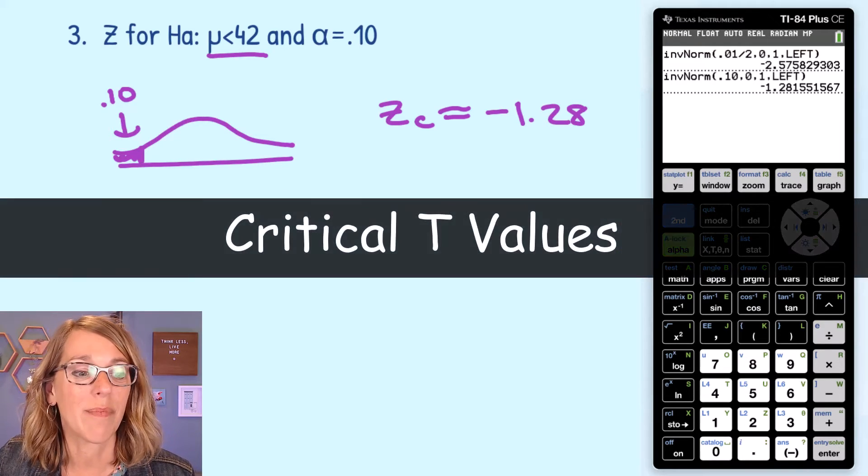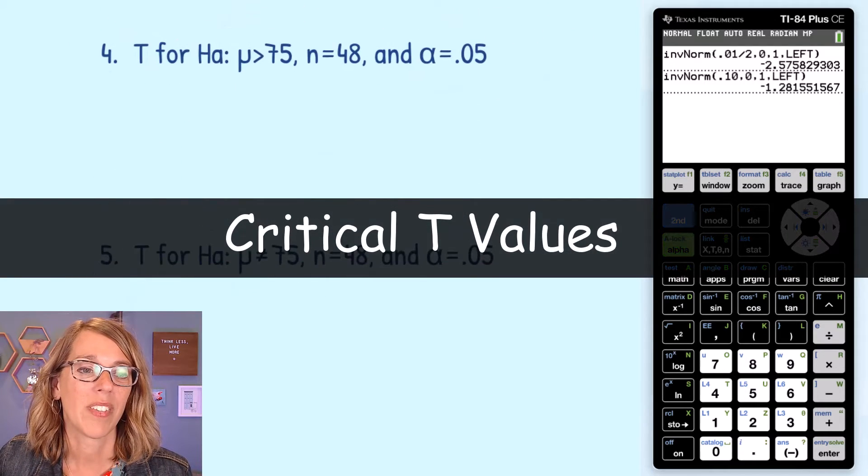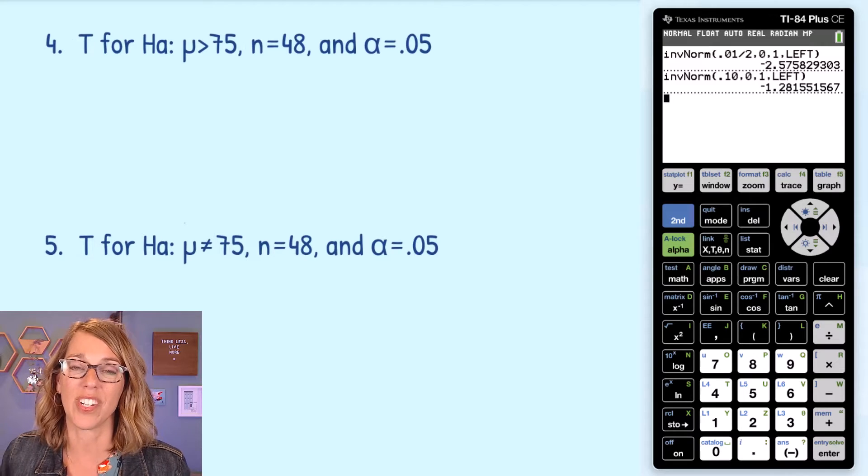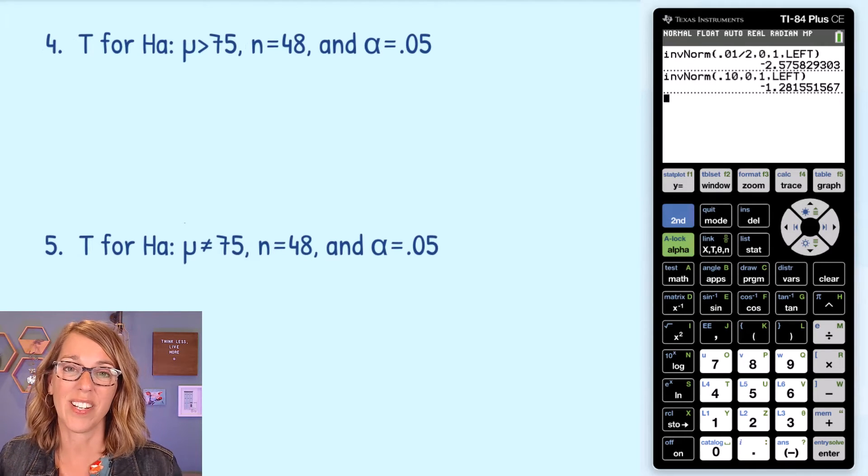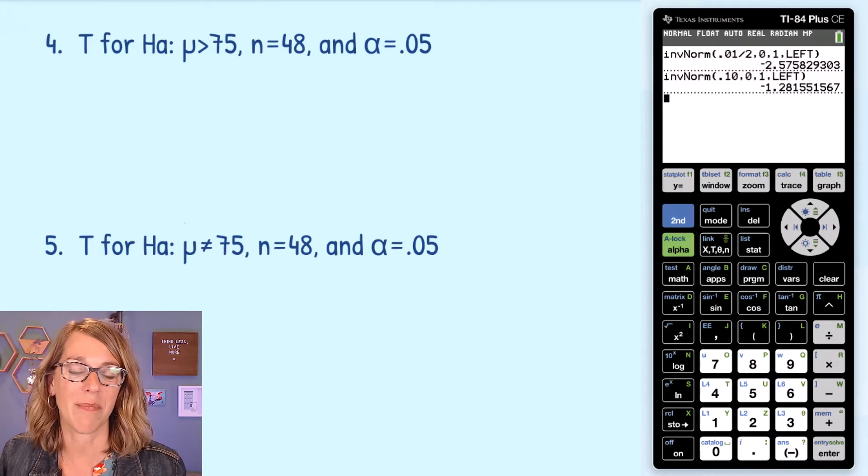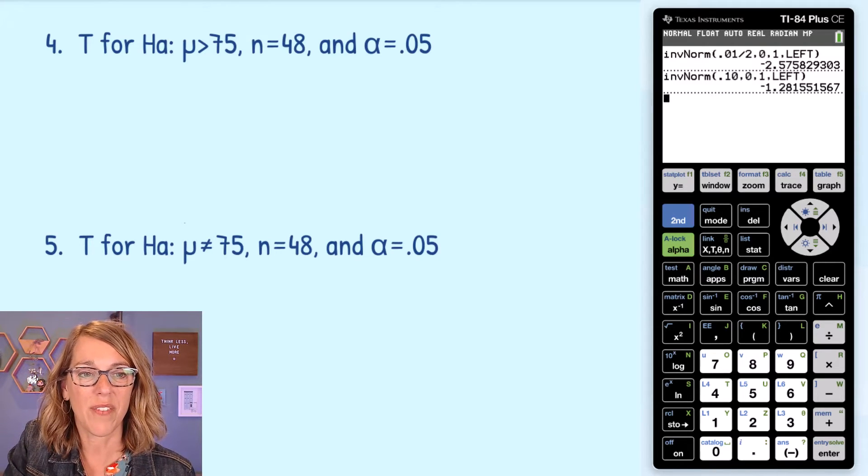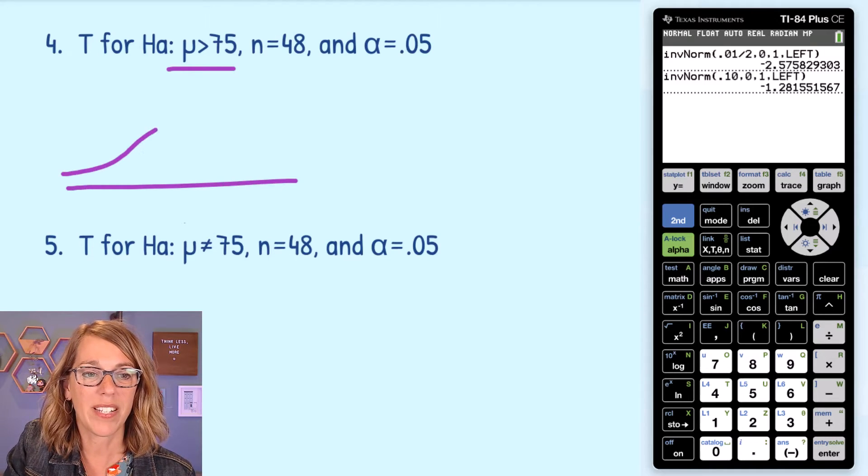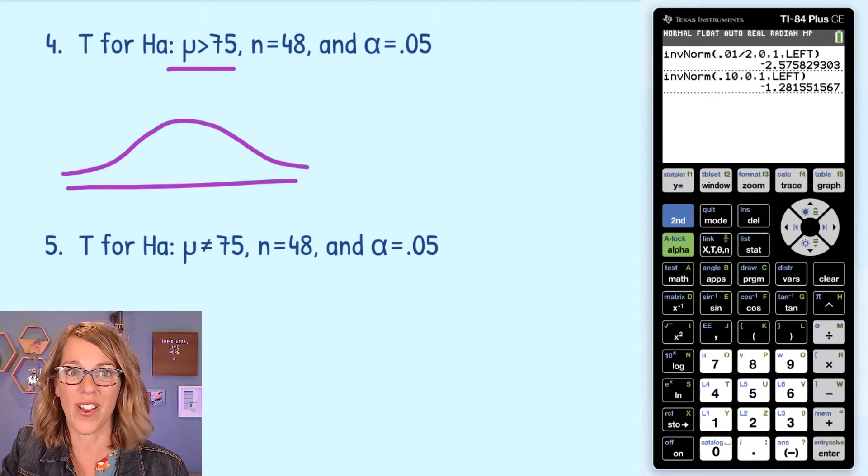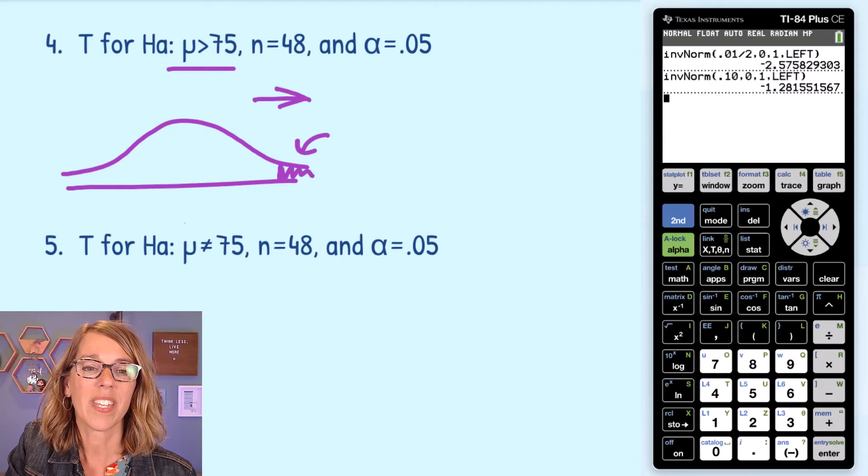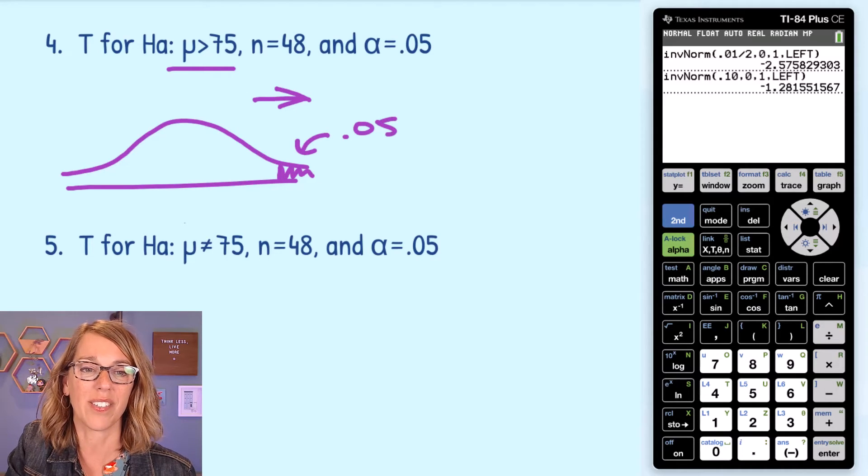Next, let's take a look at some t-scores. The t-distribution is very similar to the z-distribution. It's just adjusted when we don't know the population standard deviation. In this first example, I've got an alternative hypothesis with a greater than symbol. So I'm going to go ahead and draw my t-distribution, which is going to look very similar. That greater than points to my rejection region on the right-hand side. It's got an area of 0.05.